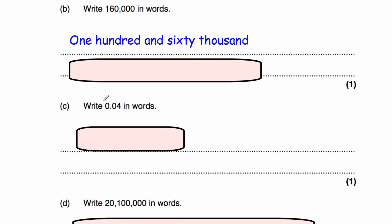Question 9C: we've been asked to write the number 0.04 in words. We've got no units, no tenths, but we've got four hundredths. So our answer is four hundredths.